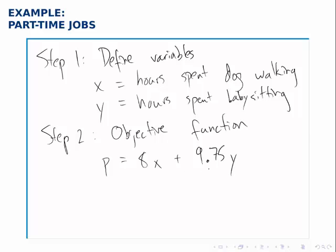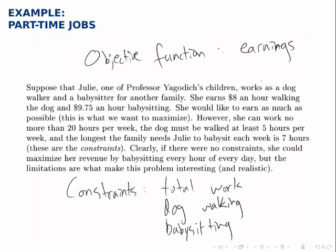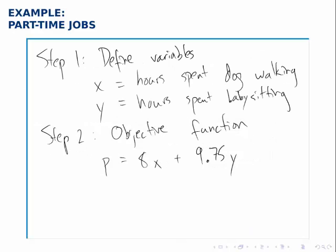If you ever struggle when writing down the objective function, think about a concrete example. Think about if she spent one hour dog walking and two hours babysitting. You could easily figure out how much she makes total — you would naturally multiply $8 times 1, plus $9.75 times 2, and add them together. So if you can think about a concrete example and pay attention to what you did to find her earnings, that will tell you how to write the objective function. In general you'll multiply 8 times x, 9.75 times y, and add them together. That's our objective function.